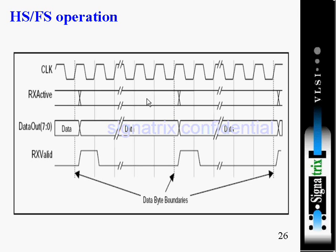When Rx valid is low, the received data is not valid. USB will not take data during that time. The data is constant, it is not changing, so USB is not sampling data here — it is maintaining. No data transfer will happen at that point. Data will transfer only when the signal is changing.